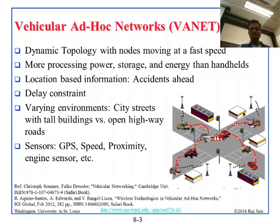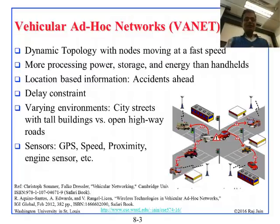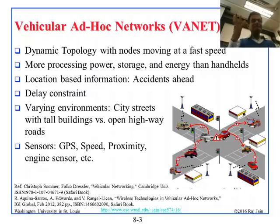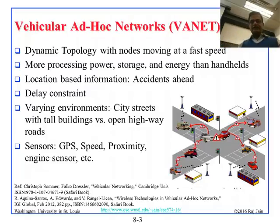Delay constraints matter — you want current information, not something half an hour old. An accident from half an hour ago is not of interest. There are also varying environments: highways, roads, streets, tall buildings, open areas. Cars come with all kinds of sensors — GPS, speed, proximity, engine sensors, etc. — that want to communicate their information.